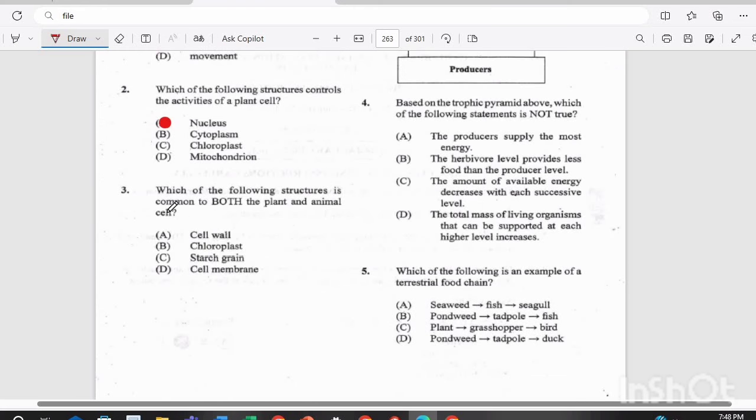Question three. Which of the following structures is common to both the plant and animal cell? Is it the cell wall, chloroplast, starch grain, or cell membrane? Answer there is D. Cell membrane.